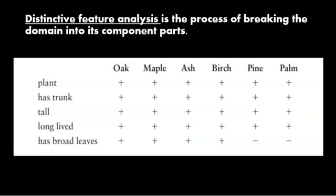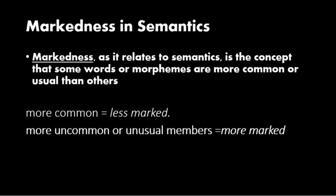Distinctive feature analysis is the process of breaking the domain into its component parts using the plus and minus system. We can determine other words that may belong in a domain. For trees, the semantic property that distinguishes pines and palms from the rest is that they don't have broad leaves. Most laypeople distinguish mainly between deciduous trees — whose leaves fall at one time of year — and evergreen trees, whose leaves don't.